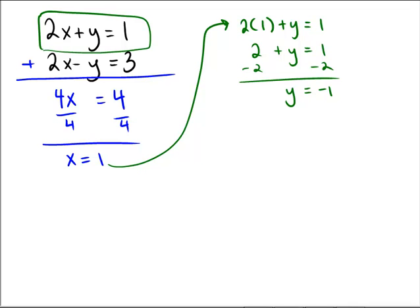So unlike the other two, the consistent dependent and the inconsistent system, this time we actually do get a solution that says that x,y is equal to the coordinates 1 for x and negative 1 for y. Hopefully you got the same answer.